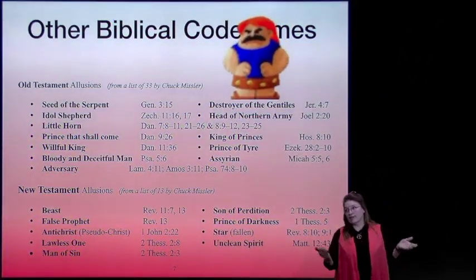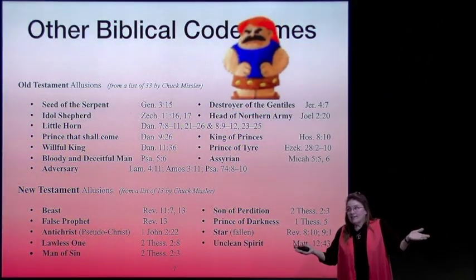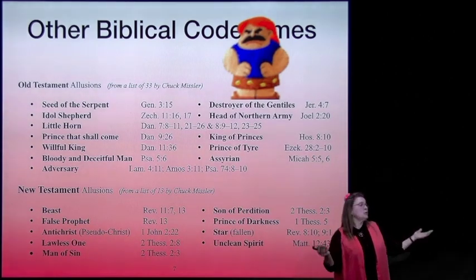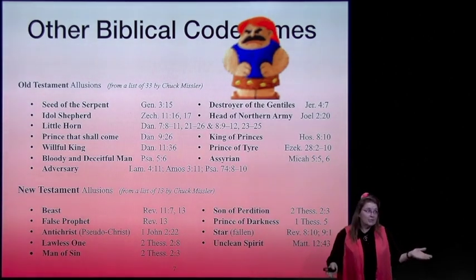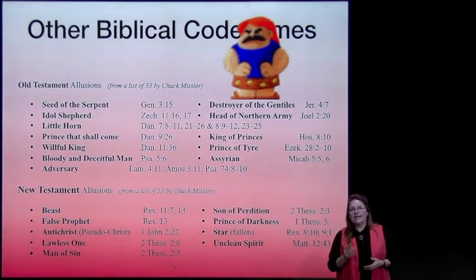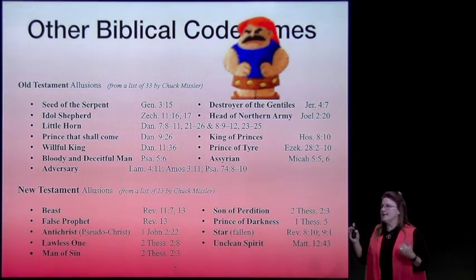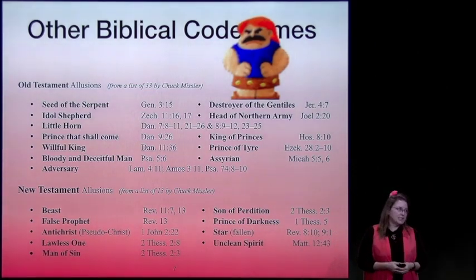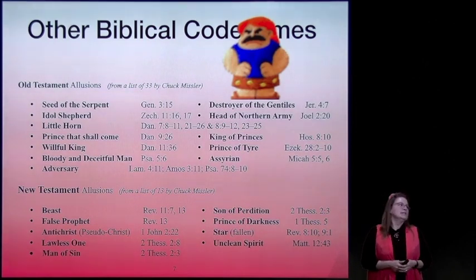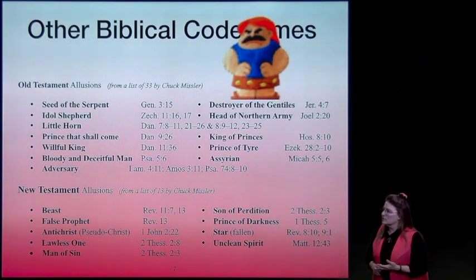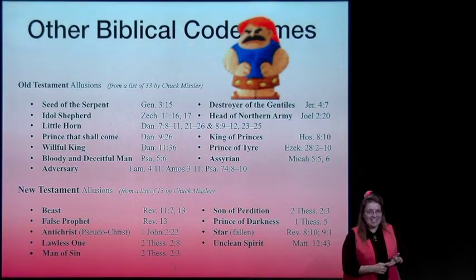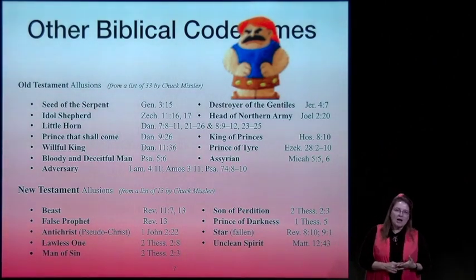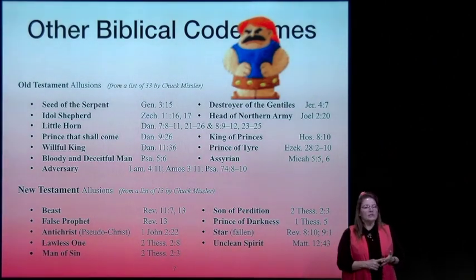We have other biblical code names for him. Isaiah, Jeremiah, Ezekiel—all the Old Testament prophets—are not the only ones to use code names for particular characters. This end-time bad guy, this apocalyptic antichrist, is the seed of the serpent in Genesis, the idol shepherd in Zechariah, the little horn of Daniel, the prince that shall come, and the willful king.